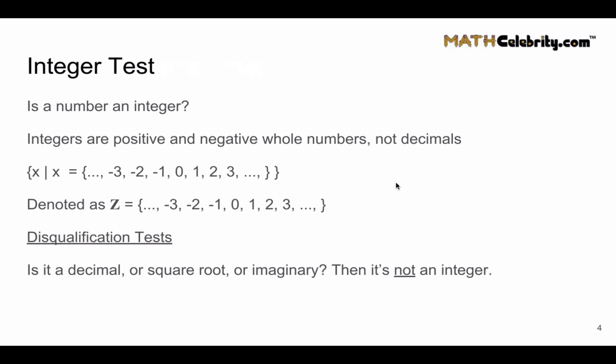If you're interested in disqualifying to determine that a number is not an integer, then ask yourself these three questions: Is it a decimal? Then it's not an integer. Is it a square root or a root of a number? Then it's not an integer. And of course, is it imaginary? Then it's not an integer.